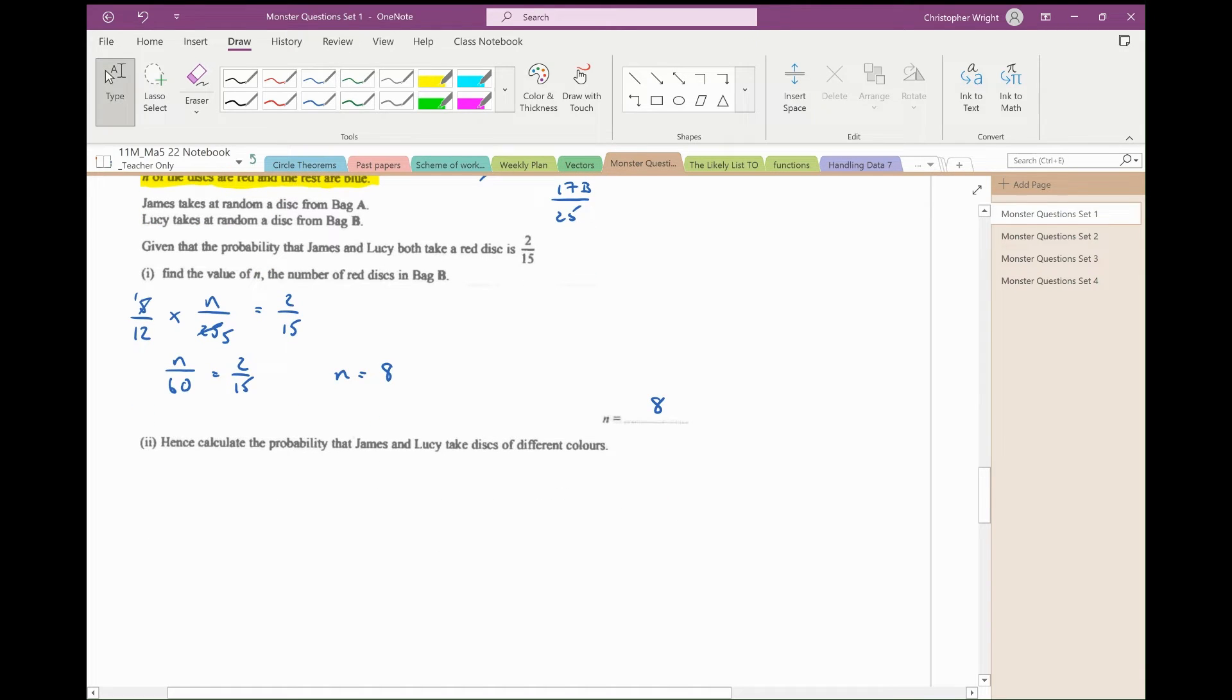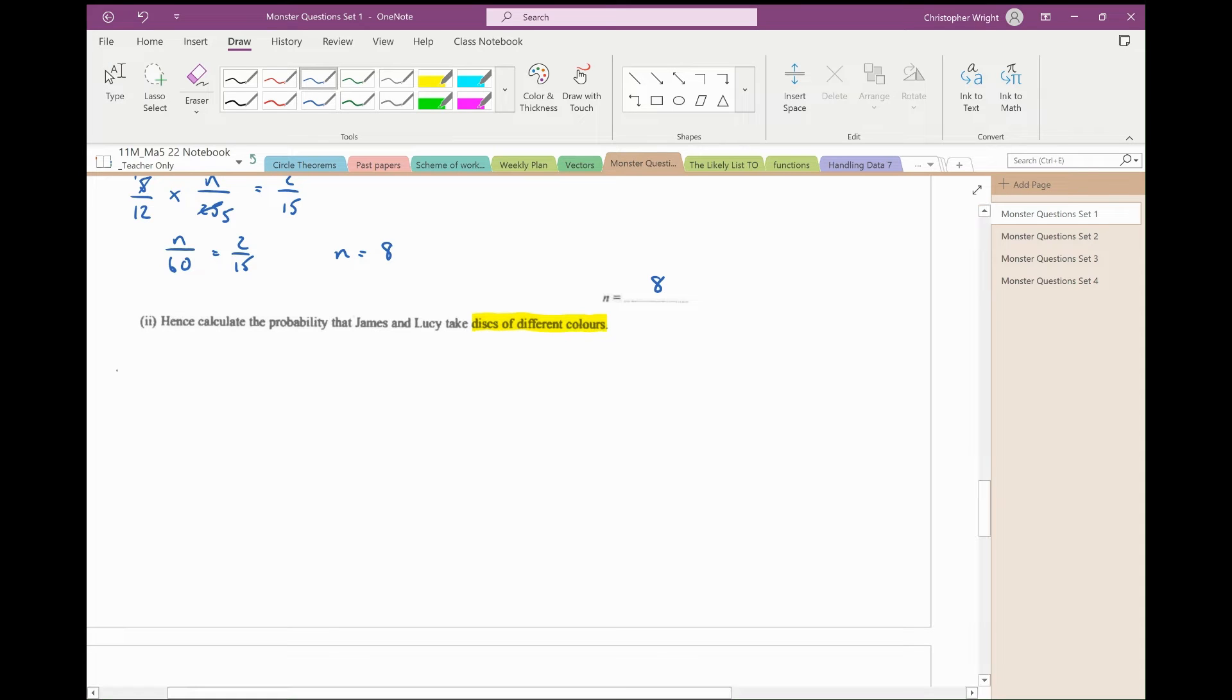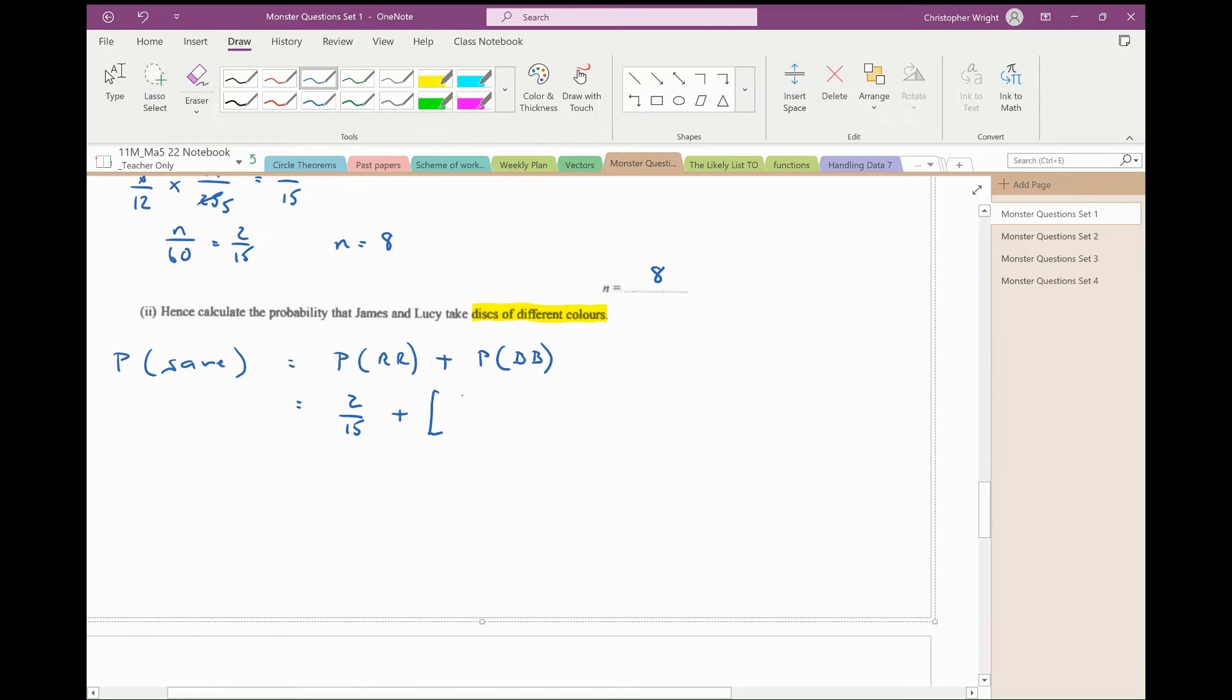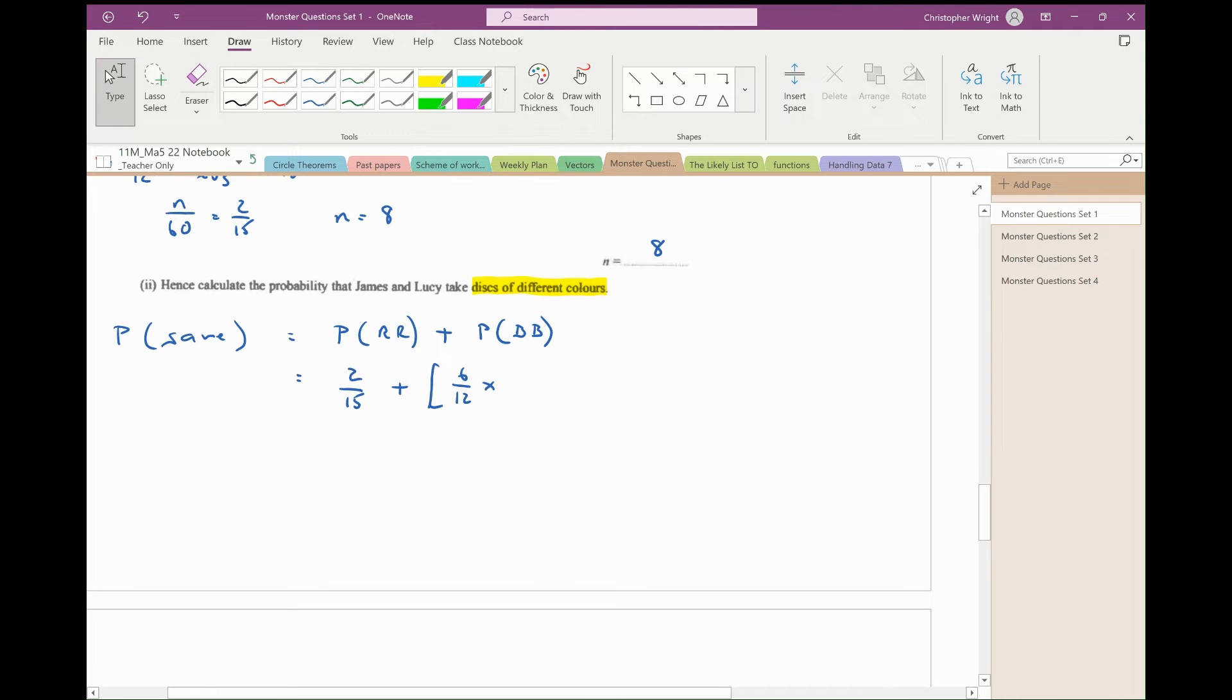Hence calculate the probability that James and Lucy take discs of different colours. There seem to be lots of different ways they can take discs of different colours. So I'm going to find the probability that they take discs of the same colour, which is the probability that they both take a red plus the probability that they both take a blue. The probability that they both take a red, we already know, is 2 fifteenths. The probability that they both take a blue is the probability that the first of them takes a blue, 6 out of 12, multiplied by the probability that the second of them takes a blue, 17 out of 25.